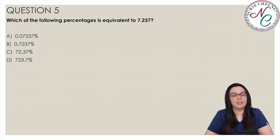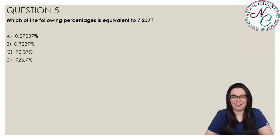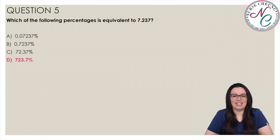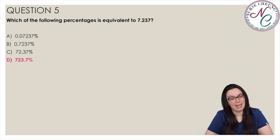Which of the following percentages is equal to 7.237? Is it A, 0.07237%; B, 0.7237%; C, 72.37%; or D, 723.7%? The correct answer is D, 723.7%. To convert a decimal to a percentage, we move the decimal point to the right two places, making 7.237 equal to 723.7%.